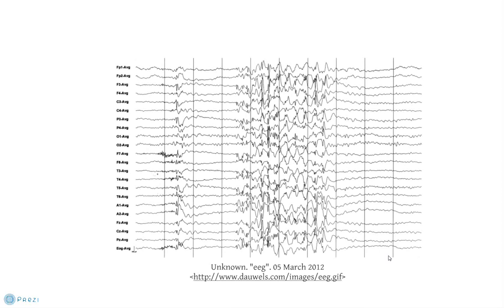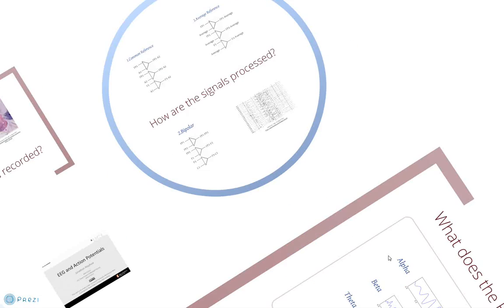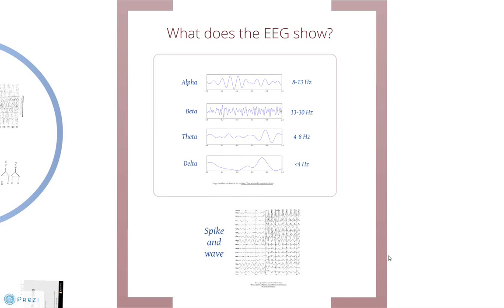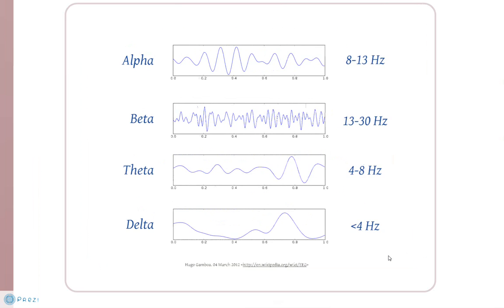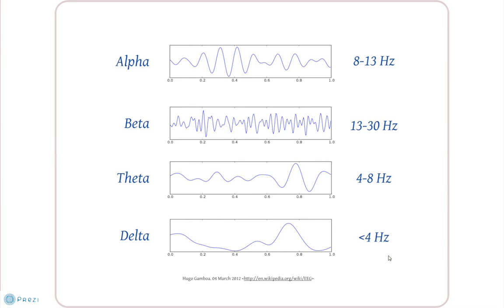And this moves us on to the clinically important question: what does the EEG show? When looking at the EEG trace, there are generally a few different types of waves characterized by their frequency. Alpha waves typically have a frequency of 8 to 13 hertz and are seen in adults at rest with eyes closed and relaxed. Beta waves are higher frequency and are seen commonly in alert awake adults.